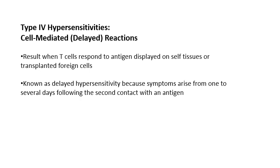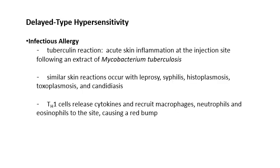The last type is type 4 hypersensitivity. Types 1 through 3 are on the B cell or humoral defense line because they involve antibody reactions. Type 4 hypersensitivities are T cell mediated, and are also called delayed responses because symptoms don't necessarily show up right away. For example, the tuberculin reaction — when a TB test injects a bit of antigen under your skin — is a delayed hypersensitivity. You're injected, then have to return a few days later for the results to be read.